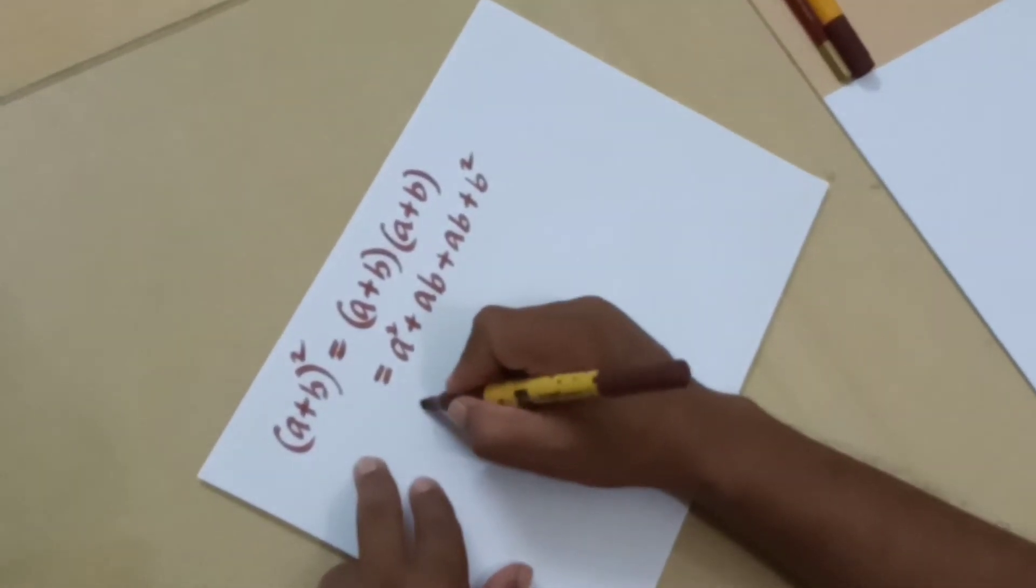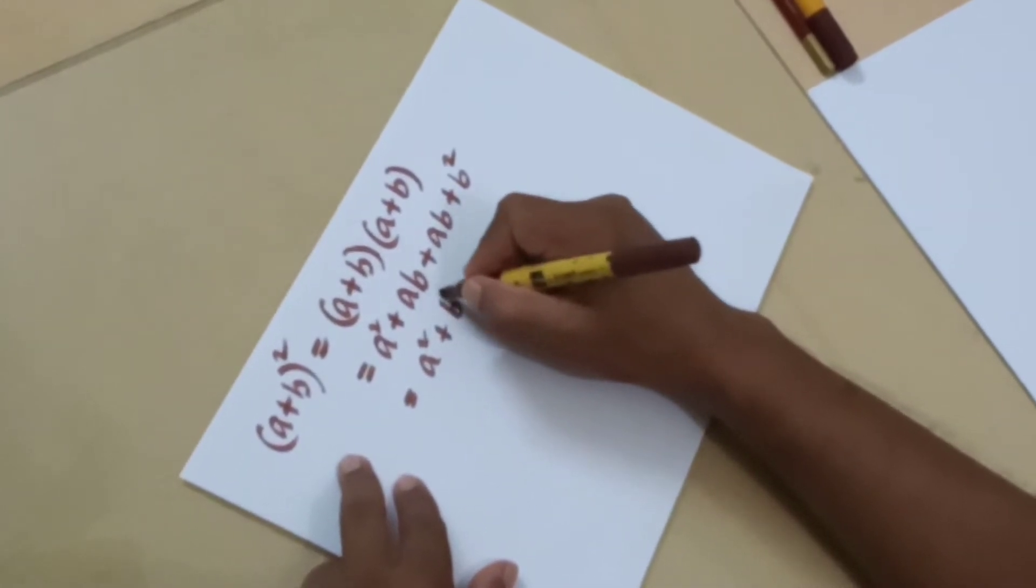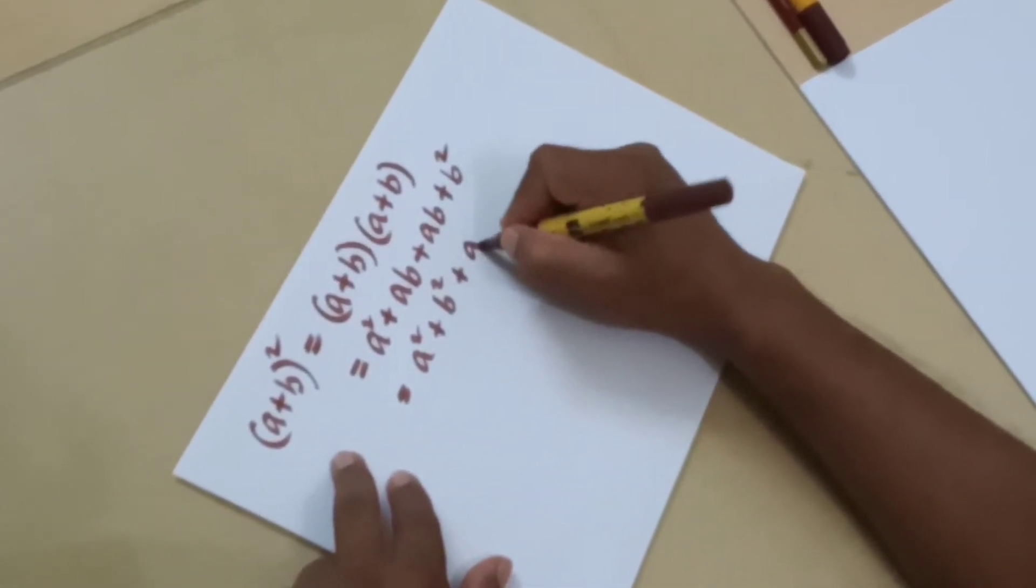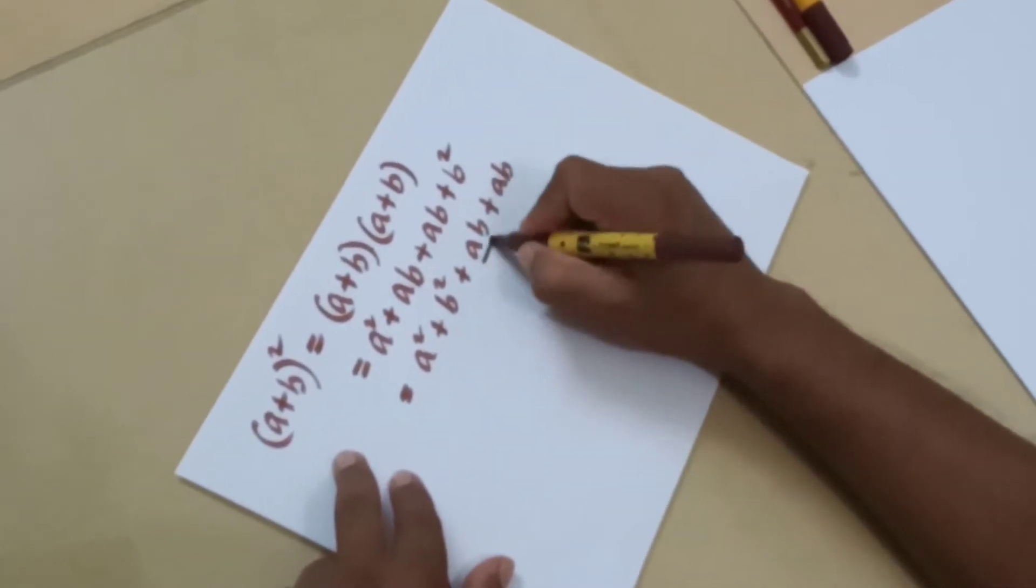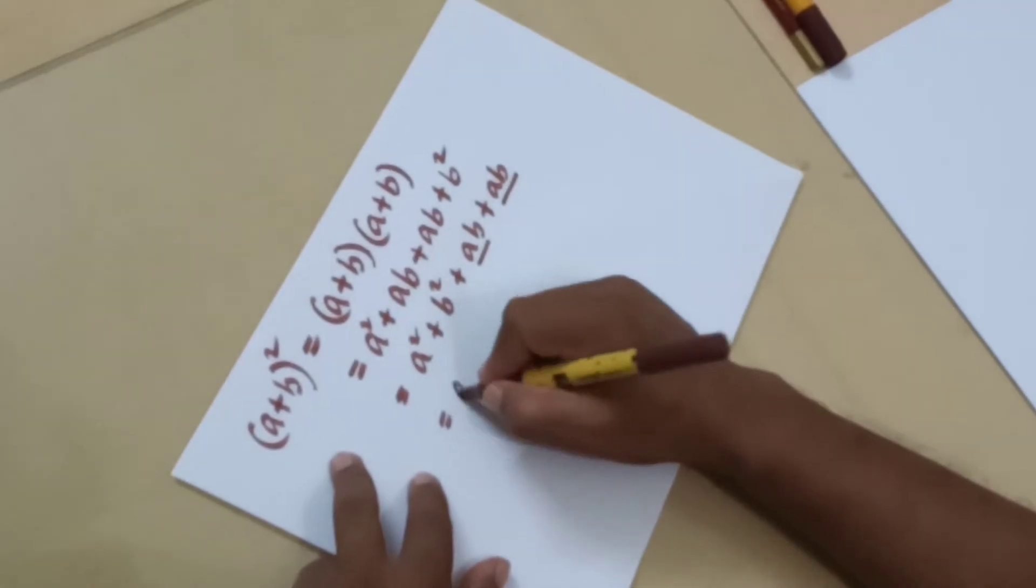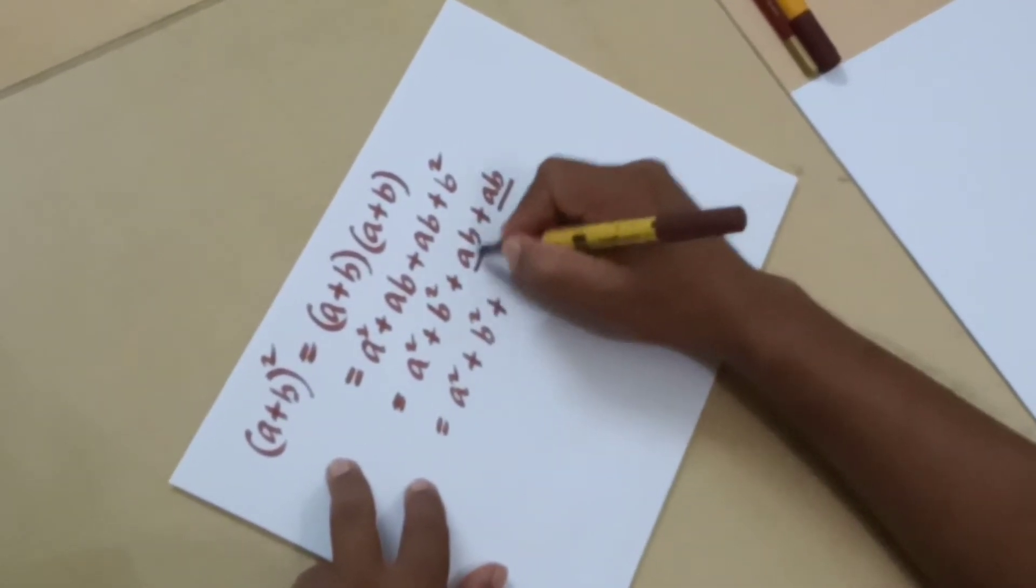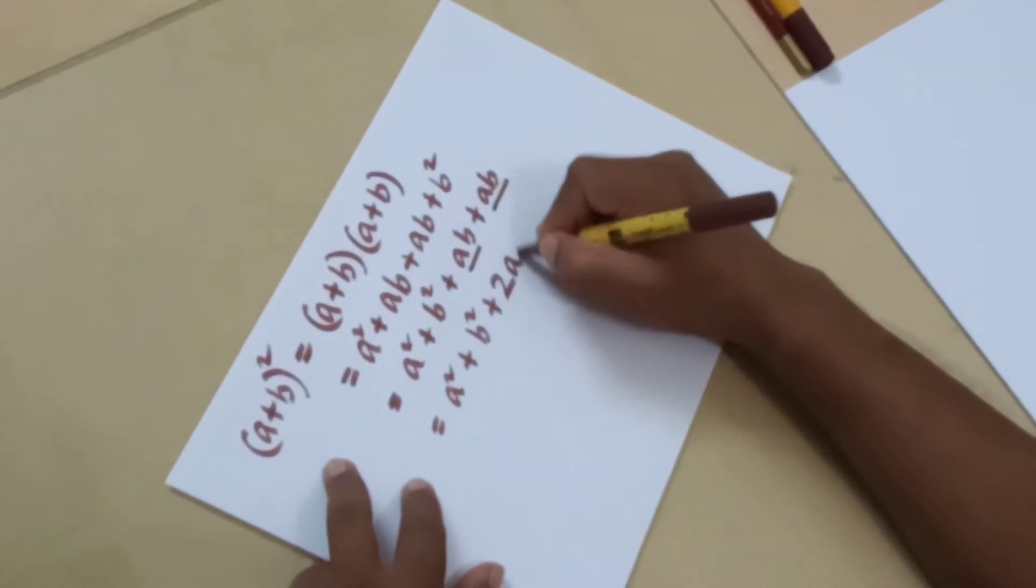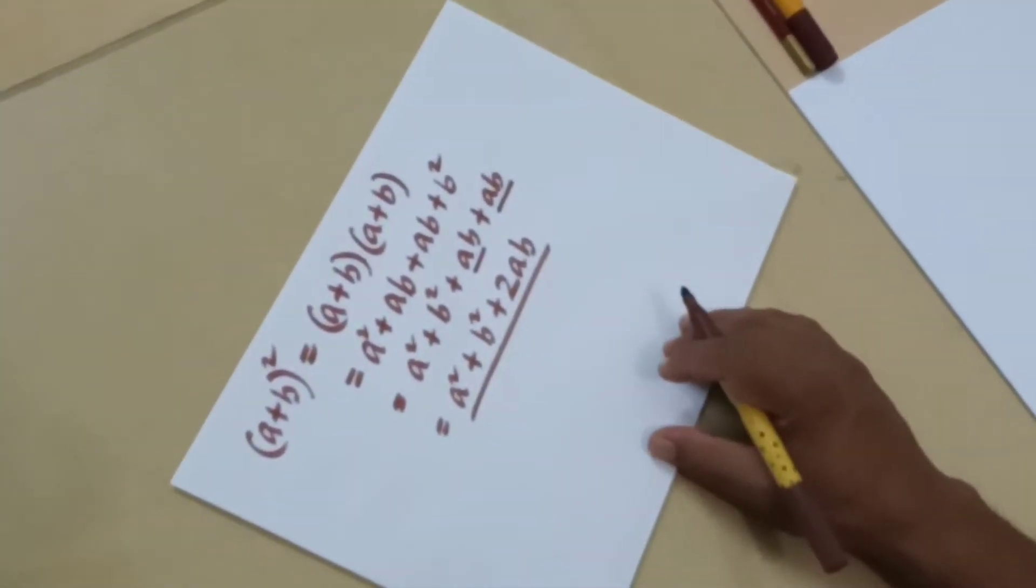Let us write this in order: a squared plus b squared plus ab plus ab. Here we have two ab's. So instead of writing ab ab we can even write it as a squared plus b squared plus two of these. So 2ab. This is the algebraic expression.